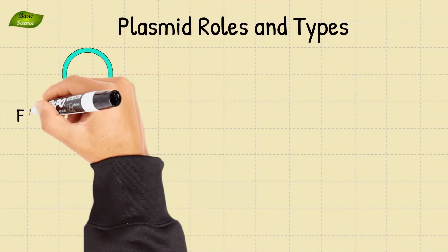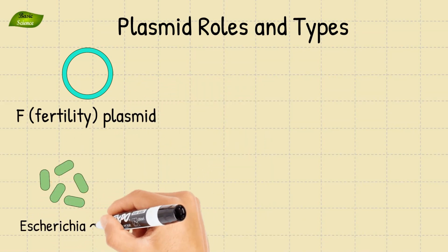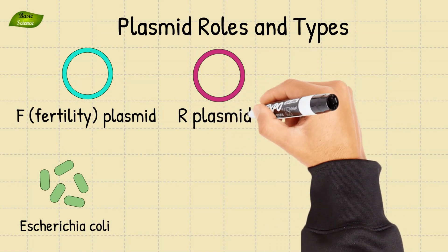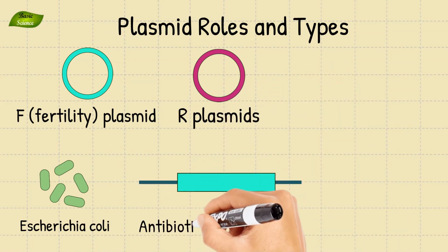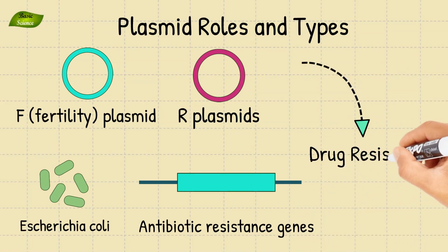The key player in conjugation is the F or fertility plasmid, a well-studied example in E. coli. Besides F plasmids, other conjugative plasmids such as R plasmids, which carry antibiotic resistance genes, play a significant role in the spread of drug resistance.